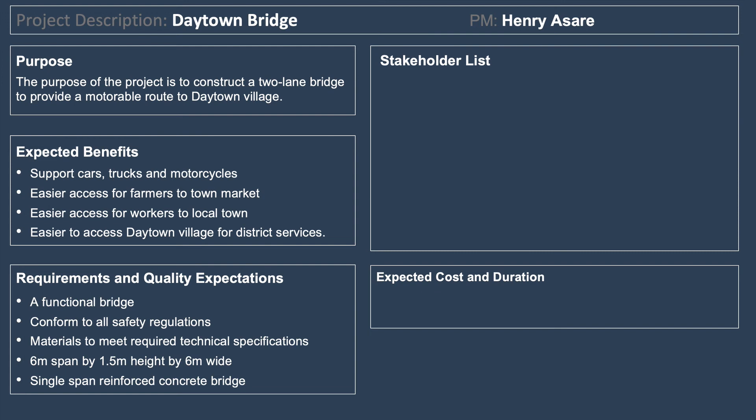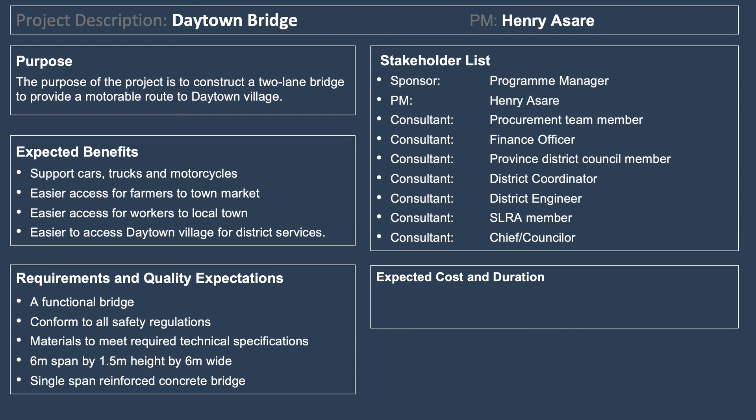The stakeholders the project manager identified include: the program manager from the local district, Henry as project manager, a procurement team member for purchasing and contracts, a financial officer to oversee budget spending, the province district council member, the district coordinator, the district engineer, an SLRA member, and the chief counselor to represent the local village.